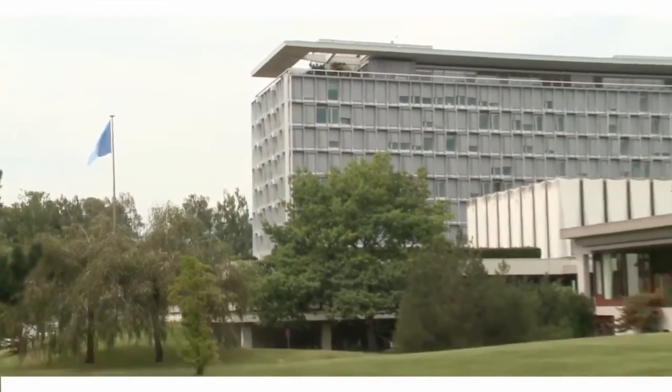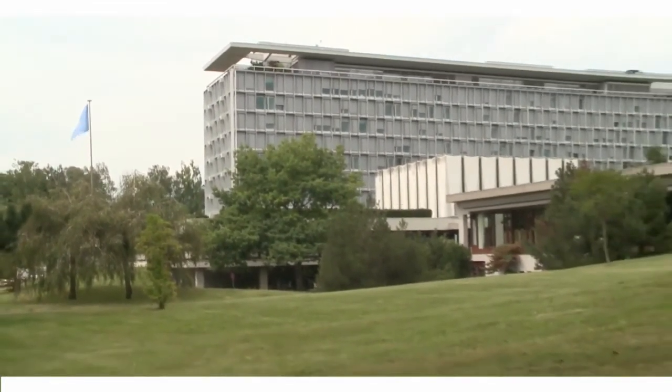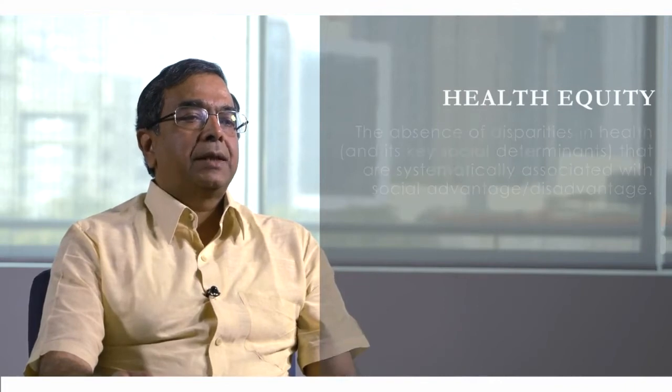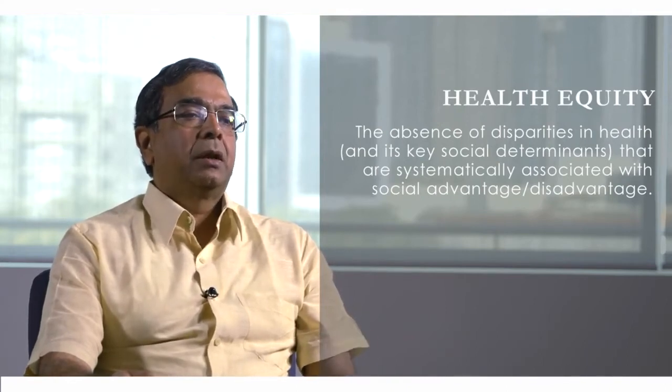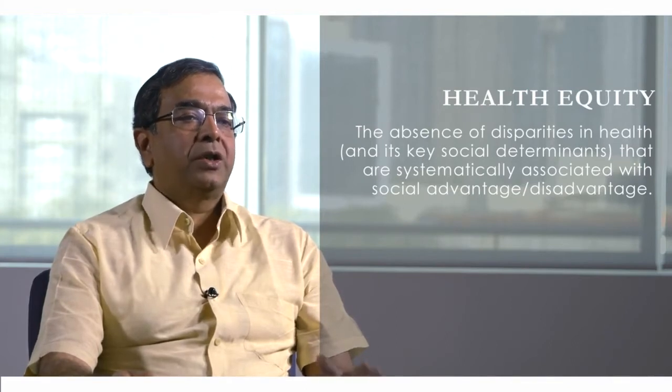The WHO Commission on Social Determinants of Health emphasized this aspect by saying that we must put health equity as central to improvement in health outcomes. We need to look at what health equity actually means. It has been defined as the absence of disparities in health and its key social determinants that are systematically associated with social advantage or disadvantage. These health disparities, when they exist, reflect health inequity — they are not merely differences in health indicators, but also in their social determinants.